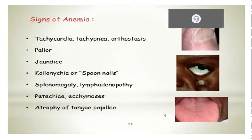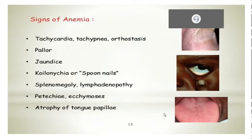Then the other signs: as there will be increased cardiac output there will be tachycardia, tachypnea, and you can have orthostasis. There can be pallor, jaundice obviously because of the breakdown of the RBCs, then increased indirect bilirubin levels. Then certain features like koilonychia or spoon nails, which is very characteristic of severe iron deficiency, which we have seen in your clinics. Then there can be splenomegaly and lymphadenopathy, especially in certain hyperproliferative or infiltrative bone marrow diseases. Petechia and ecchymosis — anemia-induced bleeding — and atrophy of the tongue papillae is very common.